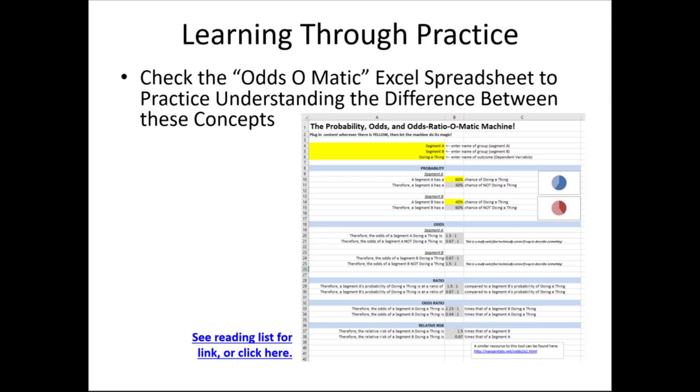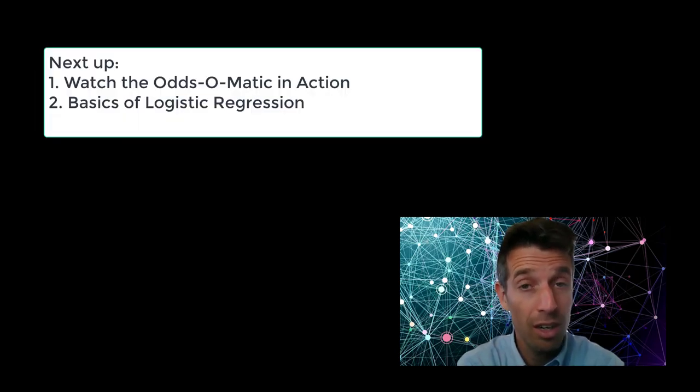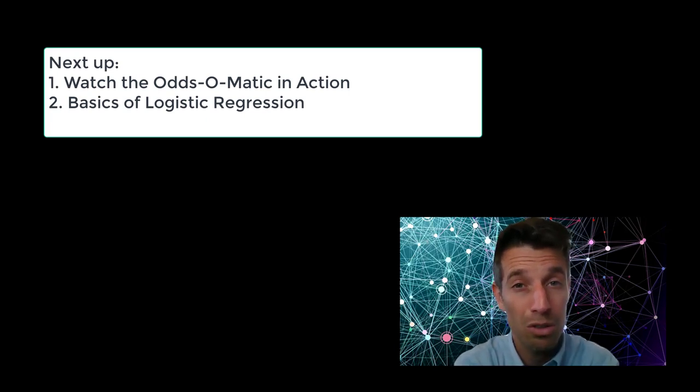For those of you taking my class, you'll be exploring this worksheet in an upcoming assignment. That was our quick introduction to probability, odds, odds ratios, and relative risk. It may feel like a 'so what' at this point, but as we move into logistic regression and other prediction models, these basic building blocks will be essential for interpreting more complex models — that's coming in the next videos.